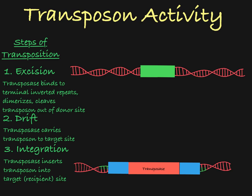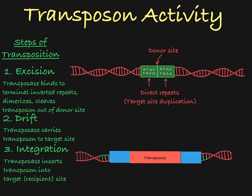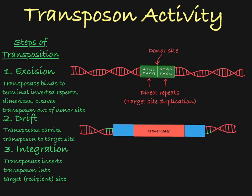As you can see, the donor site — that is, the original site of the transposon before mobilization — contains evidence of the transposon through the target site duplication that is left behind. And the recipient site, the site of novel insertion of the transposon, now contains the transposon and a new target site duplication that resulted from the insertion process.